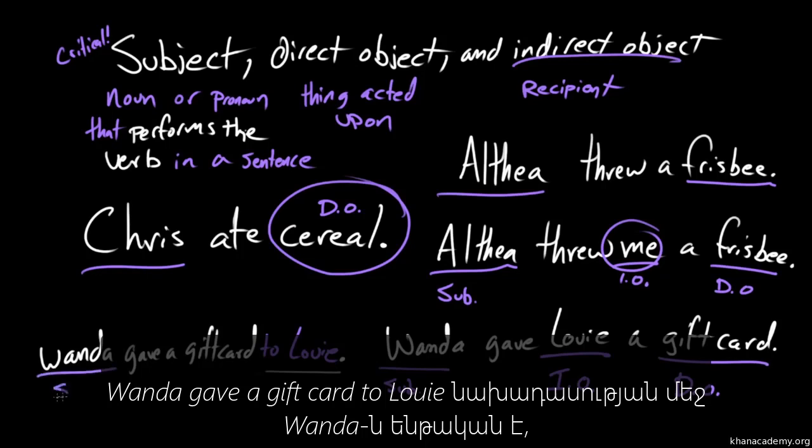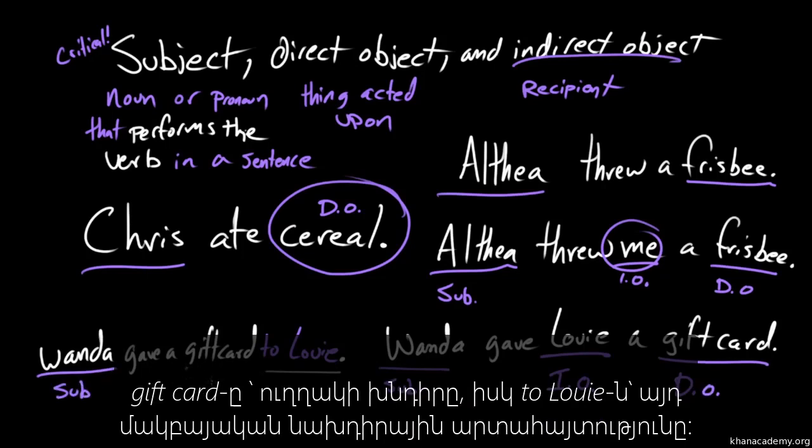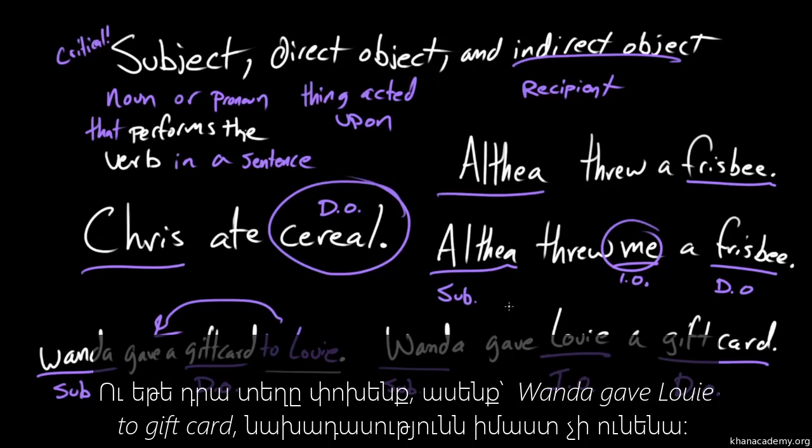So, if we've got Wanda gave a gift card to Louis, right? Wanda is the subject, gift card is the direct object, and then we can see to Louis is now this adverbial prepositional phrase that modifies gave. It's the manner in which she gave it to Louis, and if we switched it out, if we said Wanda gave Louis to gift card, that doesn't make sense at all.